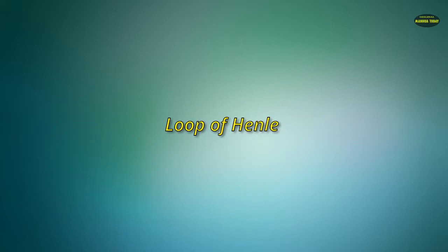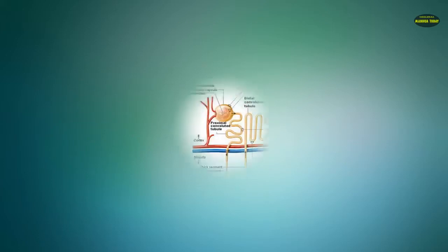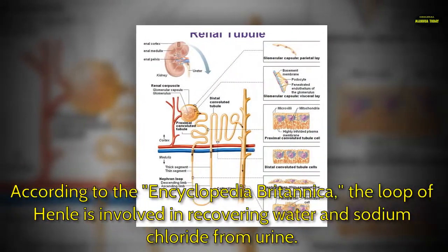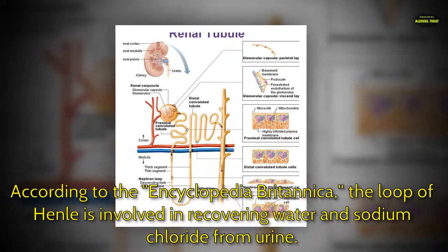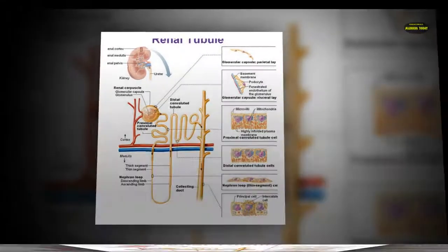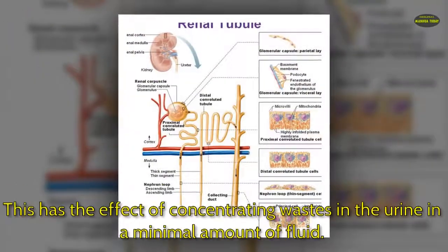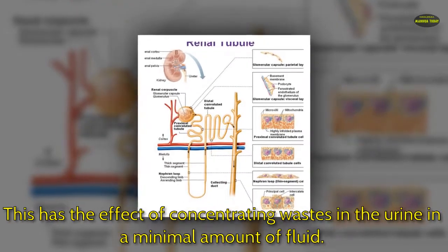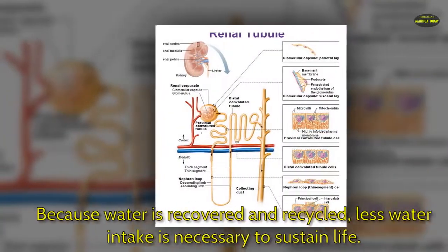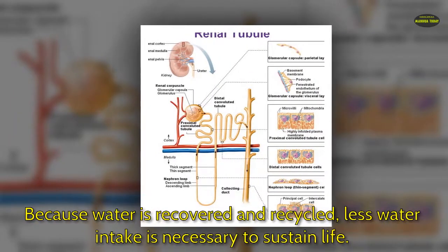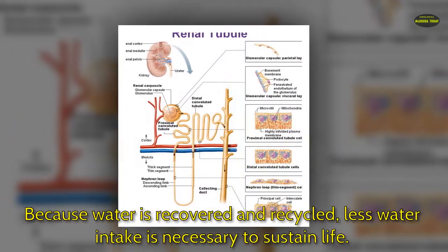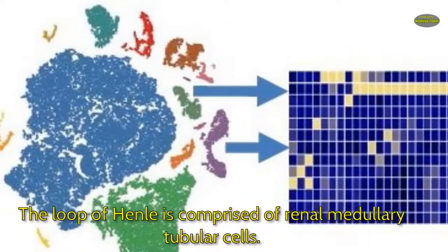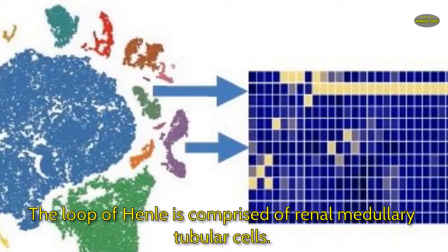According to the Encyclopedia Britannica, the loop of Henle is involved in recovering water and sodium chloride from urine. This has the effect of concentrating wastes in the urine in a minimal amount of fluid. Because water is recovered and recycled, less water intake is necessary to sustain life. The loop of Henle is comprised of renal medullary tubular cells.